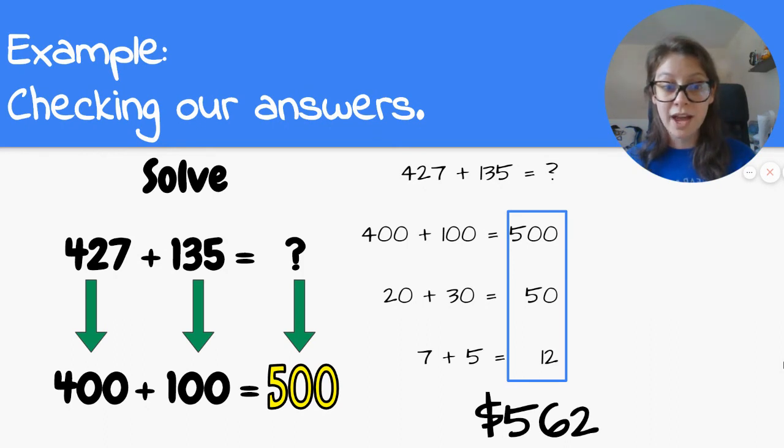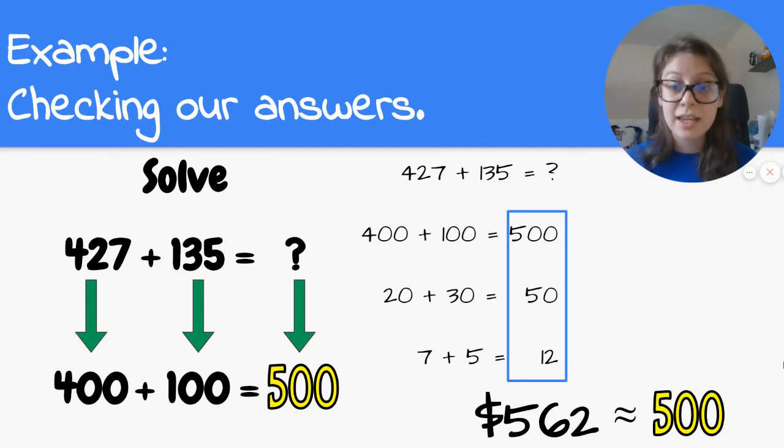Now that is much closer to my reasonable estimate of 500. So I know that this answer is probably correct because my answer was close to my reasonable estimate. So that makes my answer a reasonable answer.